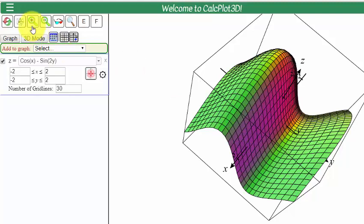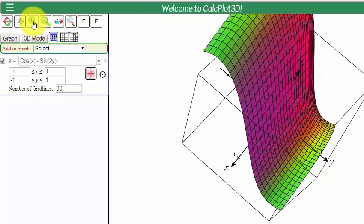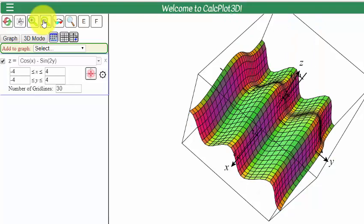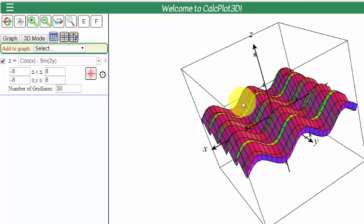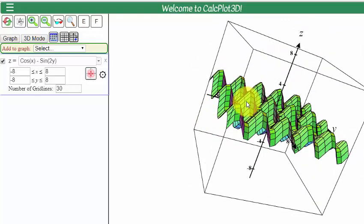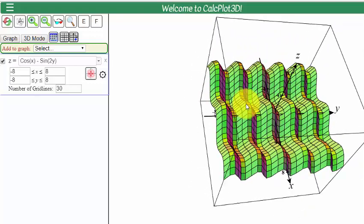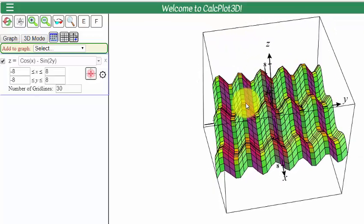I can zoom in and I can zoom out. There's a zoom in tool. There's a zoom out tool. Notice when I zoom out, I can really see the features of this function, and I can see the periodic properties of the cosine of x minus sine of 2y function.